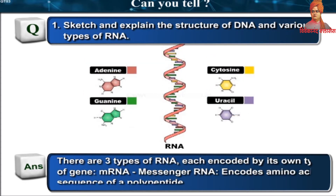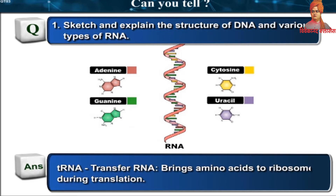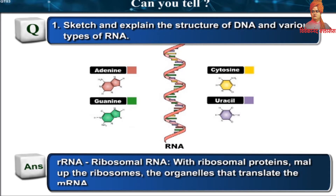These nitrogenous bases are joined with each other by weak hydrogen bonds. There are three types of RNA, each encoded by its own type of gene: mRNA (messenger RNA) encodes amino acid sequence of a polypeptide; tRNA (transfer RNA) brings amino acids to ribosomes during translation; and rRNA (ribosomal RNA), along with ribosomal proteins, makes up the ribosomes — the organelles that translate the mRNA.